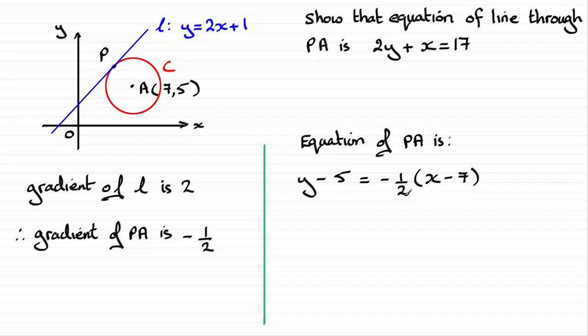And what I'm going to do now is just times through by the 2, and that's therefore going to give me 2y minus 10 equals, and this is just going to leave me with minus 1 times the bracket which will be minus x plus 7.